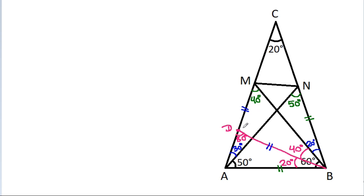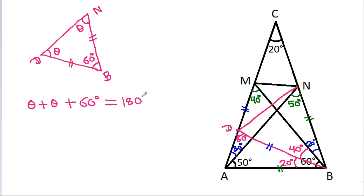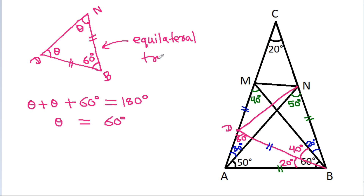Now if we join DN, then in triangle BDN, BD equals BN. So these two angles will be equal, and angle DBN is 40 plus 20 equals 60 degrees. So theta plus theta plus 60 degrees equals 180 degrees, giving theta equal to 60 degrees. Therefore BD equals BN equals DN, meaning triangle BDN is equilateral.